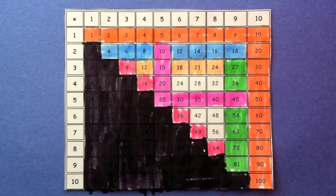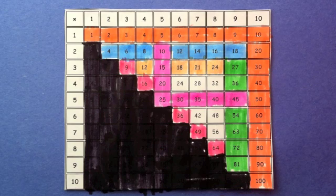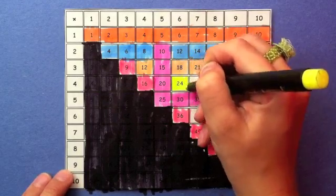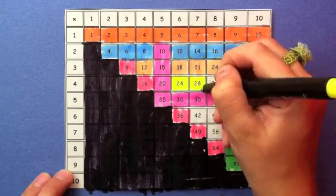So now there are only 6 left. In fact, the 4s aren't too hard, since they are twice as much as the 2s. 4 times 6 is 24. 4 times 7 is 28. And 4 times 8 is 32.